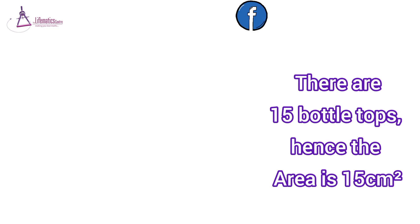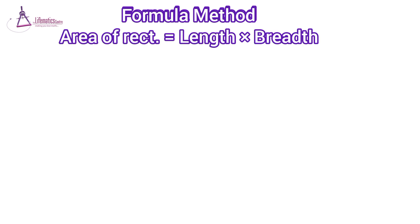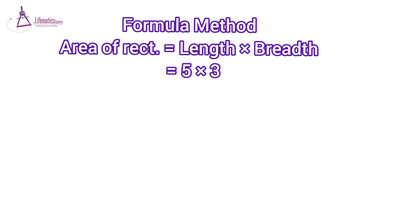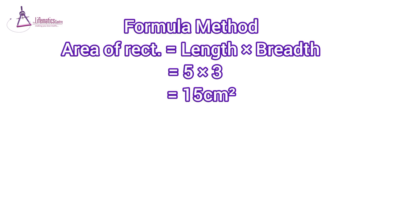Let's confirm this using the formula method. The area of a rectangle is length times breadth. The length is 5 while the breadth is 3, so that's 5 times 3. Multiply that and you have 15 cm squared, which is the same as counting the bottle tops.